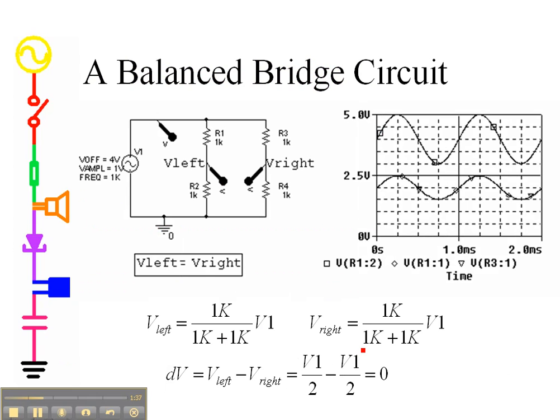As an example, if we have a balanced bridge where all four resistors are 1k, then V at the left is going to be half of the voltage from our source, which in this case was four volts. V at the right is also half of four volts. In general, when you have a balanced bridge, VA minus VB is just going to equal zero. It's one of the really nice things about the bridge. If we get a difference, we know we have something besides our basic reference.